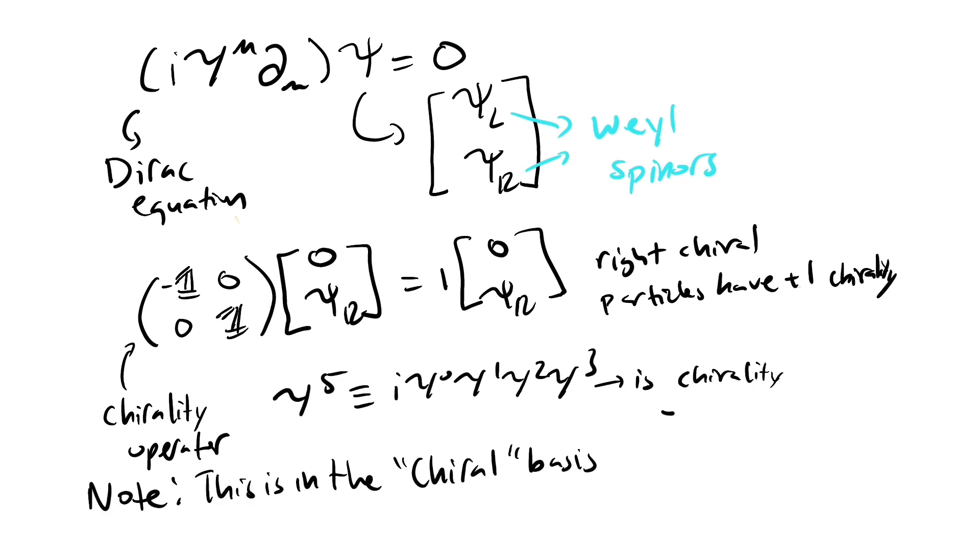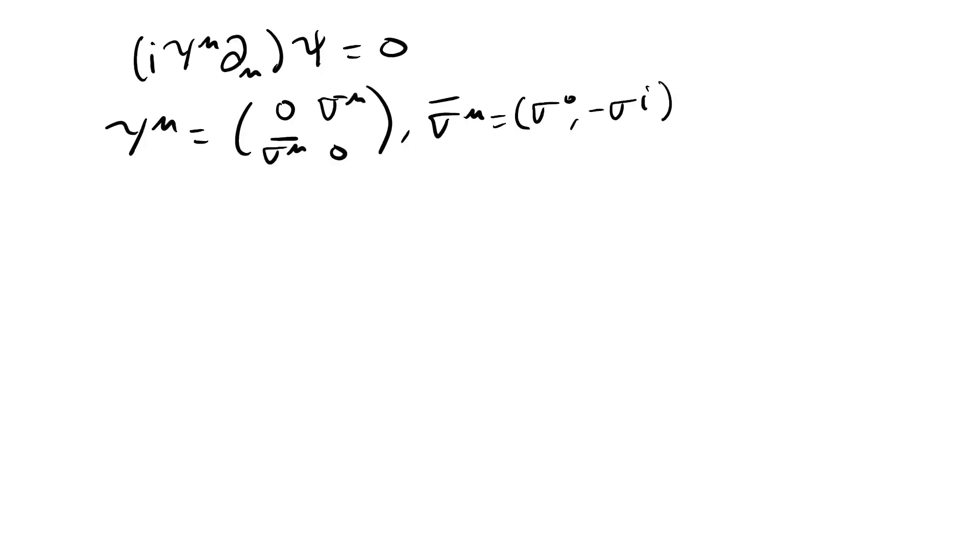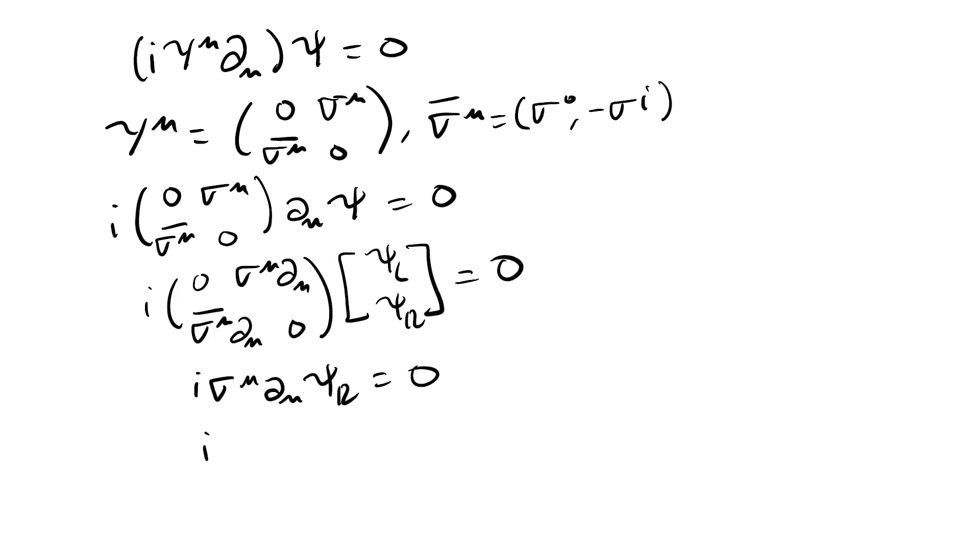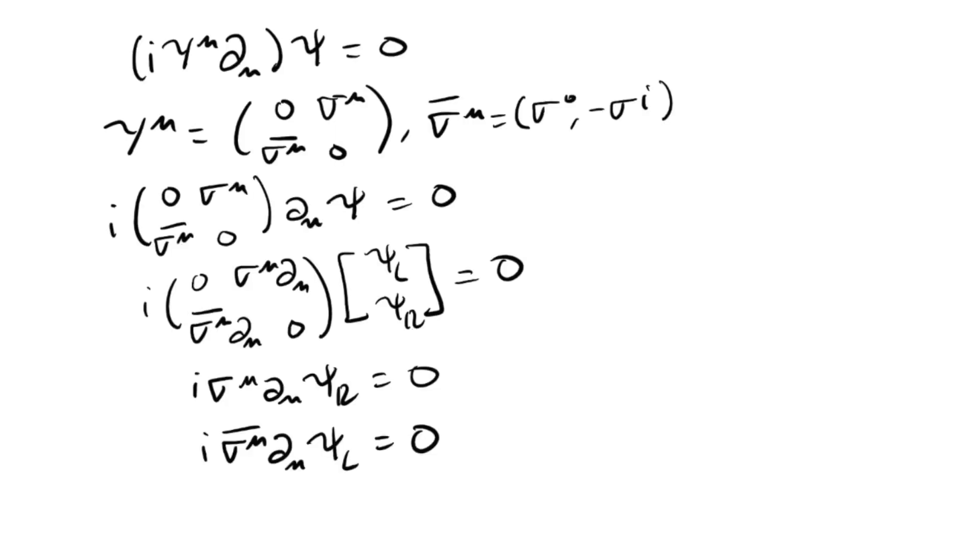We can see that in the high-energy limit, left and right-hand spinors are independent components of the Dirac bi-spinor, which is different to what we see when we solve the Dirac equation in the rest frame.